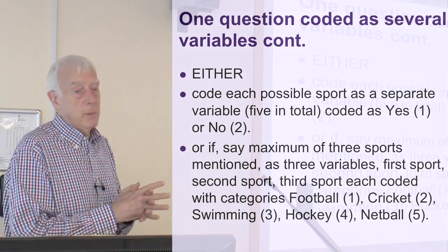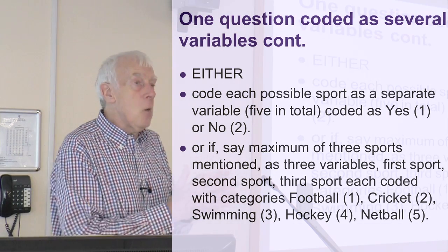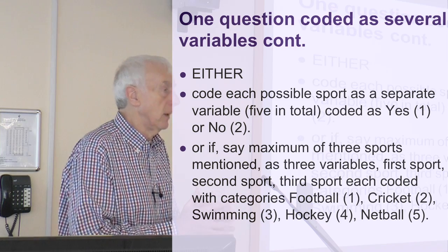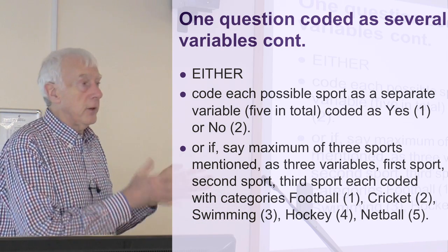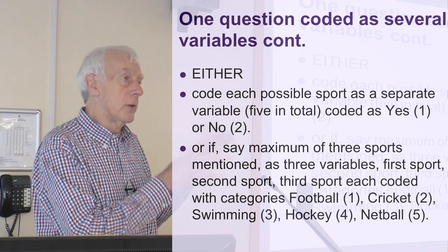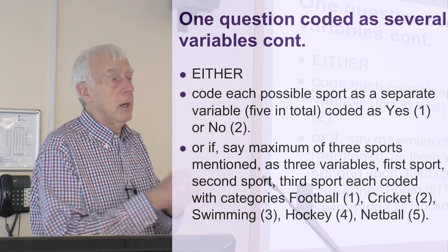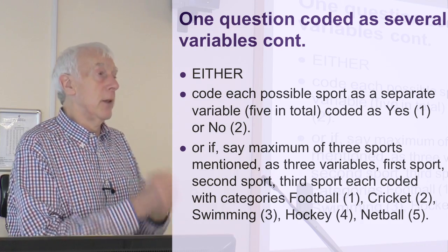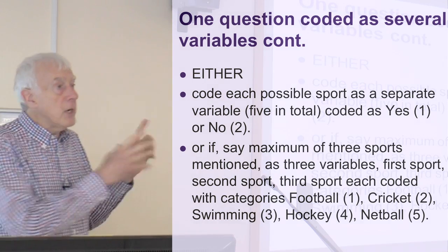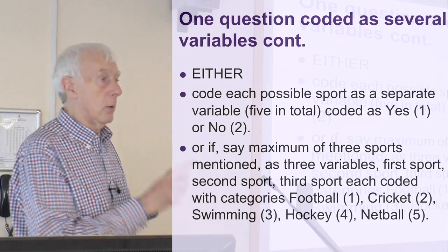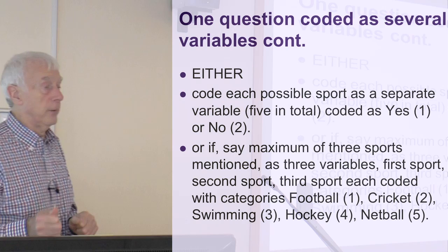Alternatively, we might look through all the results we've got, and actually nobody has more than three sports. So in that case we can have three variables: the first codes the first sport they mention, the second sport they mention, and the third — if they mention a third — or it's left empty if they don't. And for each of those three variables, we can now code one for football, two for cricket, three for swimming, four for hockey, five for netball.